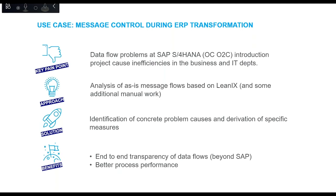At the point we came into the project, our job was to verify these to-be integration scenarios by interviewing the concerned business departments and updating the PIPO with the occurring changes, and to enable accurate message control during the ERP transformation. The key point in the S4HANA project was the order-to-cash process, where data problems were causing issues all the time because of inefficiencies in the business and IT departments. The SAP team wanted to identify these root causes in order to derive the right measures to fix the data flow problems by analyzing the message flows.